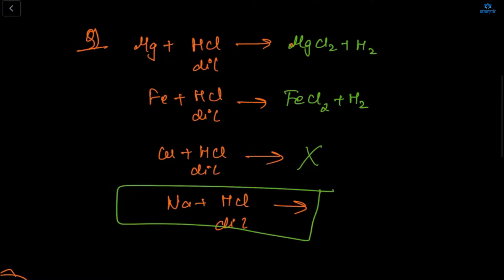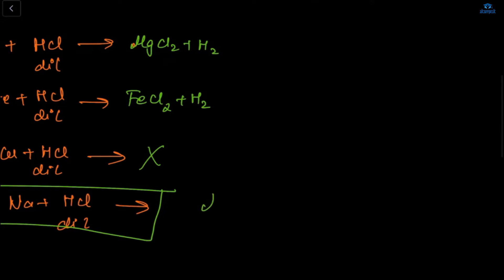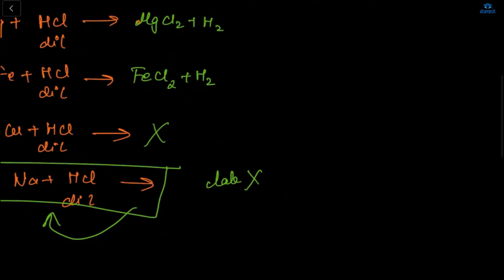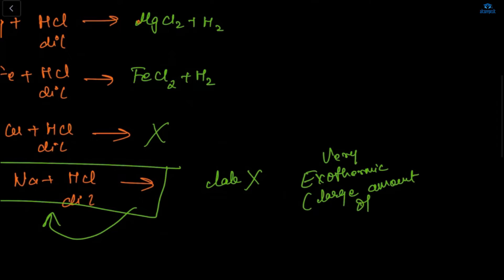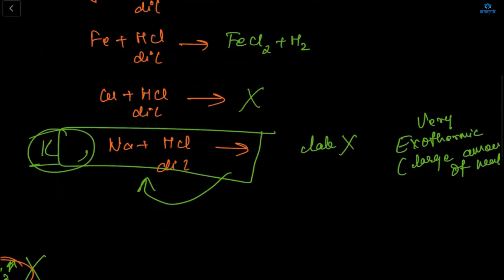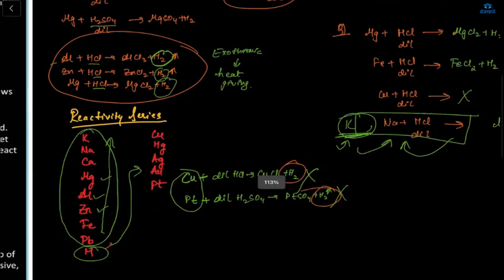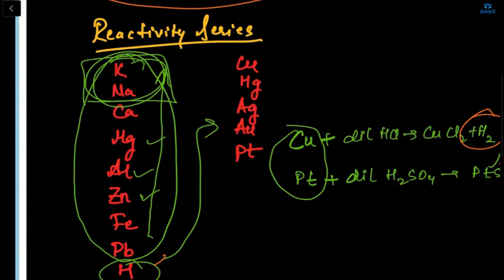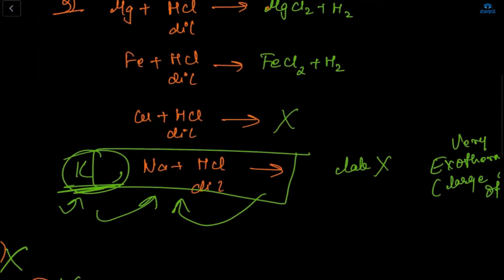With sodium and dilute HCl — this reaction we will never perform in the lab because sodium with dilute HCl is very, very exothermic, releasing a very large amount of heat. Similarly, potassium with dilute HCl we also never perform, because Na and K are the first and second in the reactivity series.